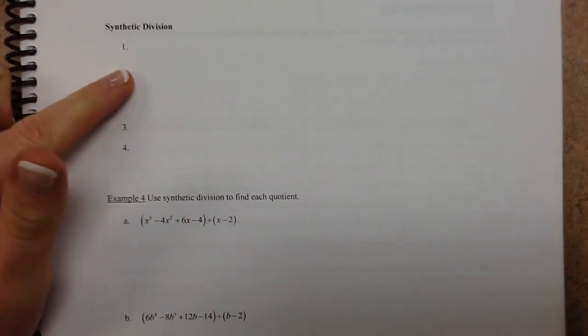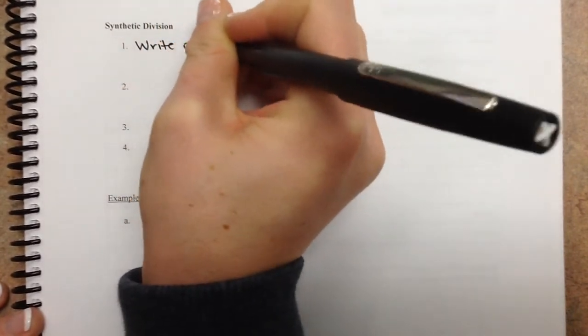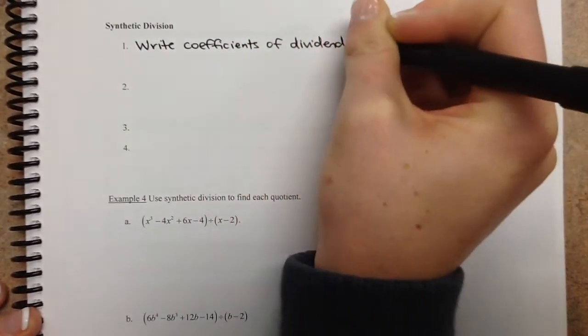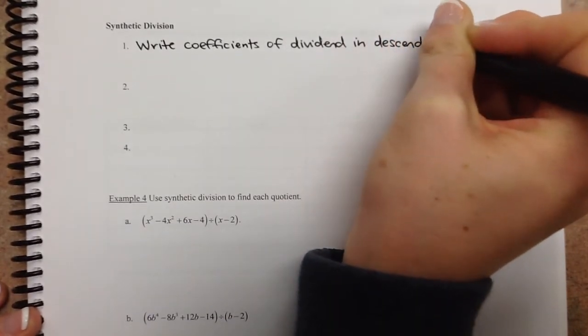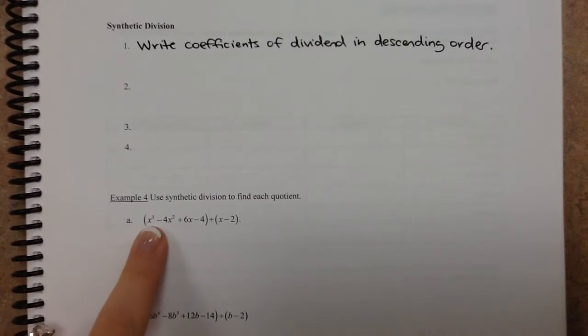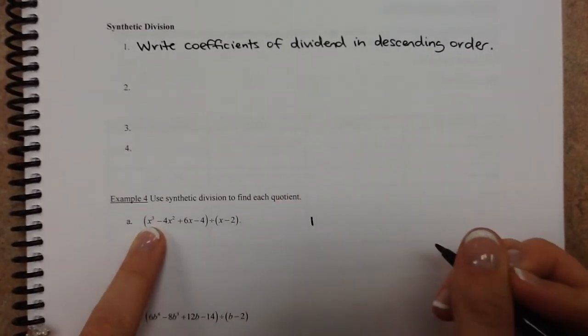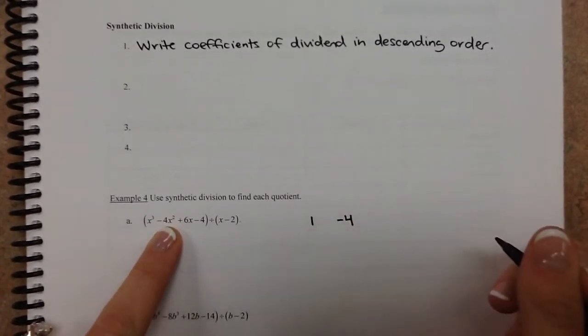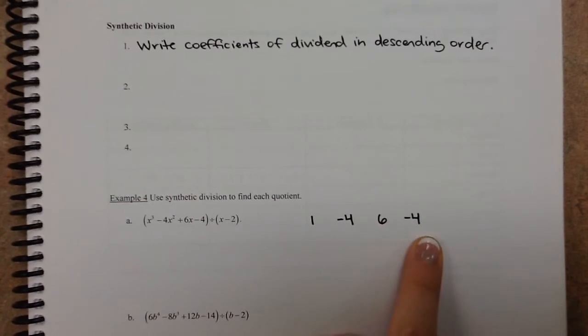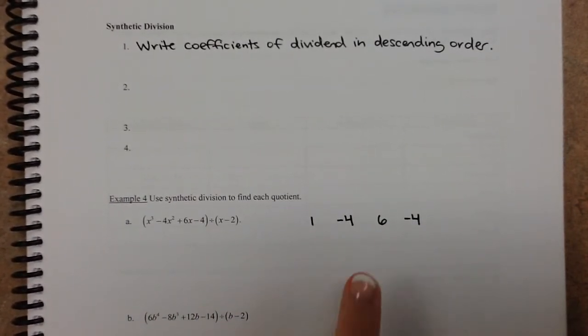So first part, step one, is we write the coefficients of the dividend in descending order. So our coefficients: we've got 1, then the coefficient on the x squared is negative 4, coefficient on the x is 6, and then the constant is negative 4. If one of them is missing, you leave a 0. You've got to make sure every single one of these is accounted for. If something is missing, like we've got an x squared missing here, you'd leave a 0. So that's a super important part.